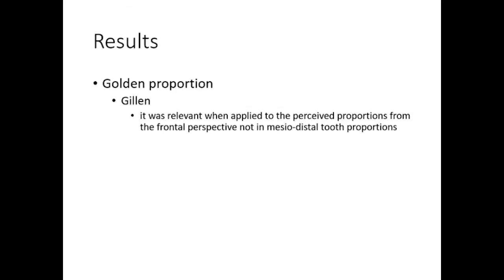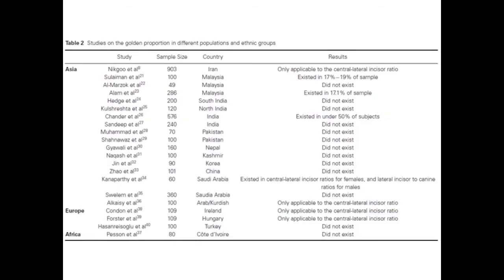Several studies concluded that there is no evidence to suggest that the golden proportion should be considered the ideal standard in aesthetic dentistry. However, Galen found that while the golden proportion was not valid when applied to measured tooth proportions, it was relevant when applied to perceived proportions from the frontal perspective. In reviewing these articles, 62% found that the golden proportion did not exist in their respective populations, and only 14% indicated it existed in a minority of samples.